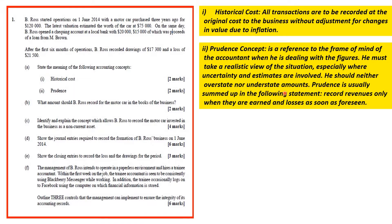Prudence is usually summed up in the following statement: record revenues only when they are earned, and losses as soon as they are foreseen. So you have to earn your revenues first before you can record them, and for losses you do the opposite — as soon as you can foresee it. For instance, if you hear that one of your debtors has gone bad and he has a big account in your books, you have to write off the debt as soon as you investigate it and find out that it is true.